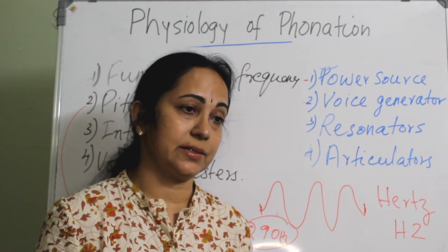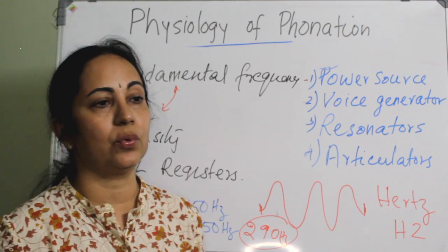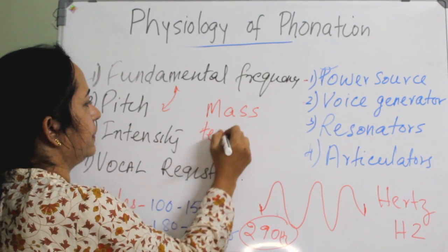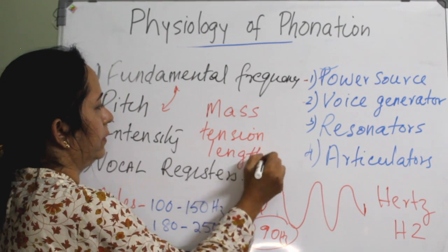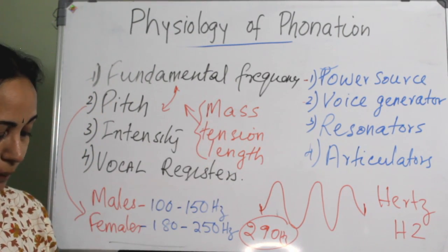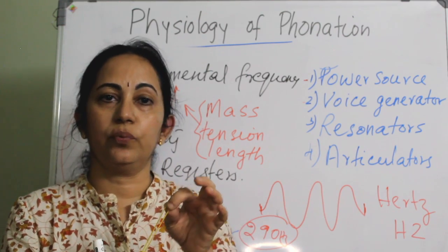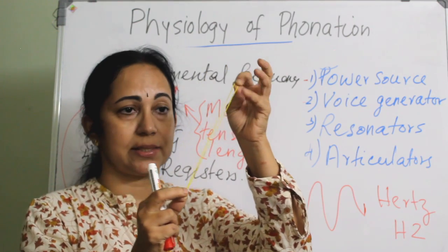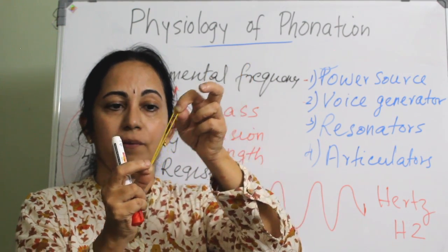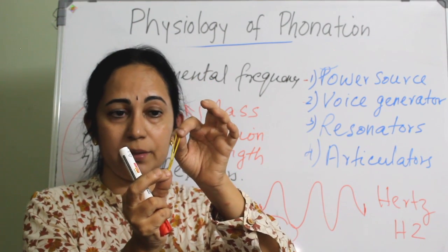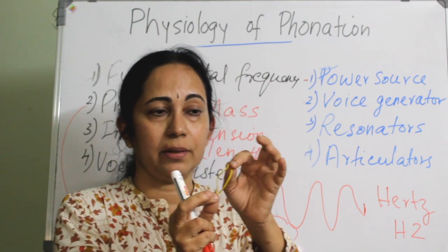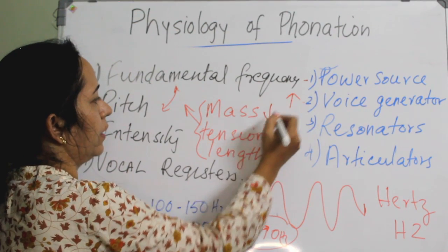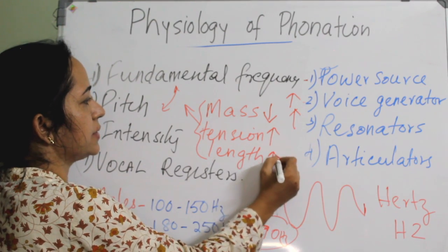Changing the pitch depends on three characteristics of the vocal fold: mass, tension, and length. Similar to a rubber band — when you stretch it, the length increases, tension increases, and mass decreases, so pitch increases. When the vocal fold is shortened, laxed, and mass increases, pitch decreases. In summary: when mass decreases, pitch increases; when tension increases, pitch increases; when length increases, pitch increases.